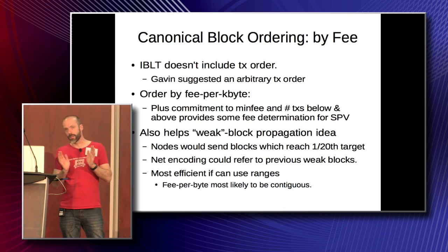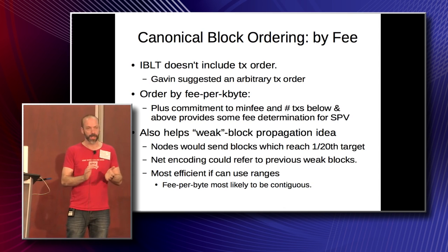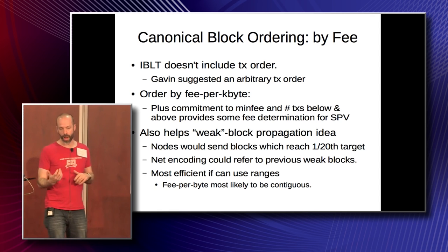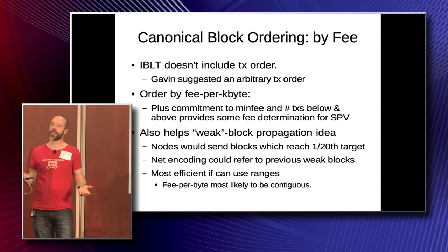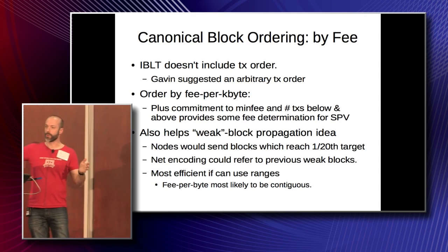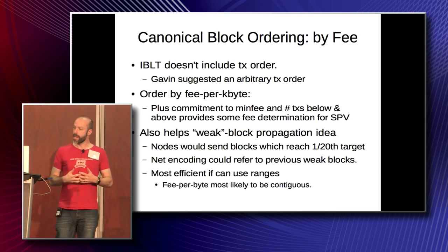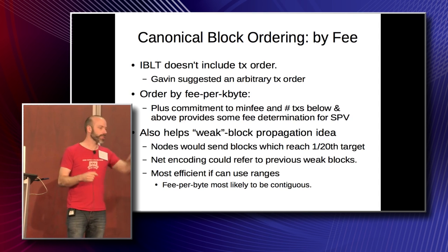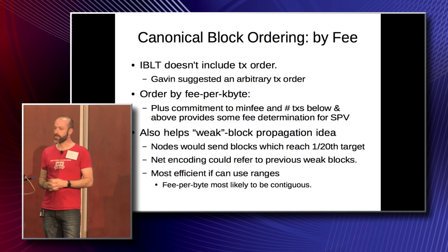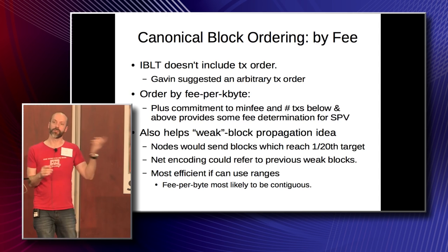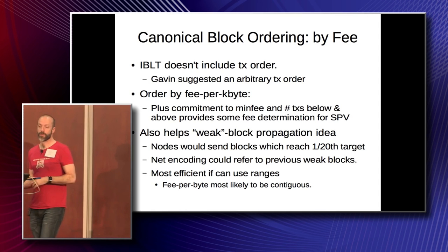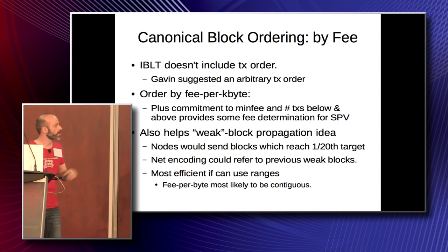There's another idea that's kind of orthogonal to IBLT: the idea of propagating weak blocks. What you do is when a miner hits a block that's only a 20th of the difficulty target, they broadcast that. So you get a whole series of weak blocks before you get a real block. The trick is the network encoding allows, when you send that weak block, you say it's just like the previous weak block, only with these updates since then. That kind of encoding is most efficient if it can represent whole ranges from the previous block, which is most likely to happen if you've ordered by fee per byte. So from that point of view, fee ordering probably optimizes your weak block encoding as well.